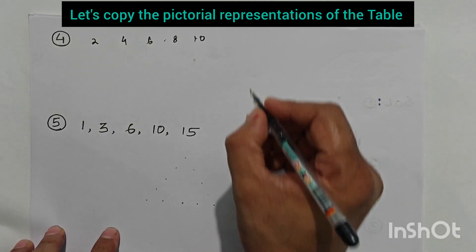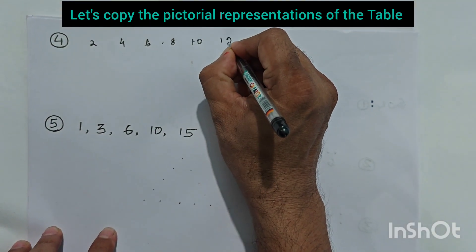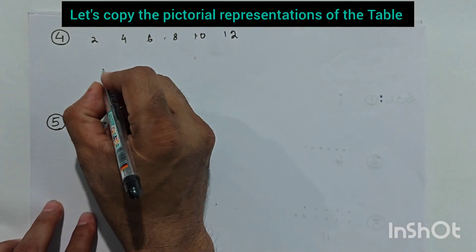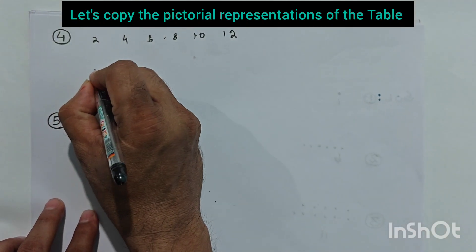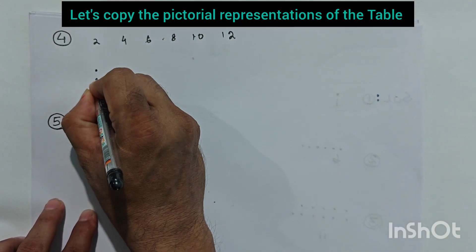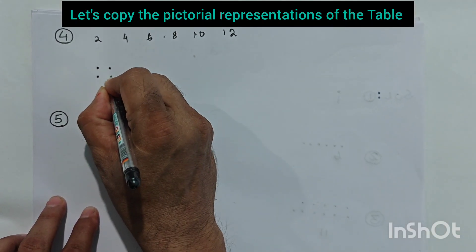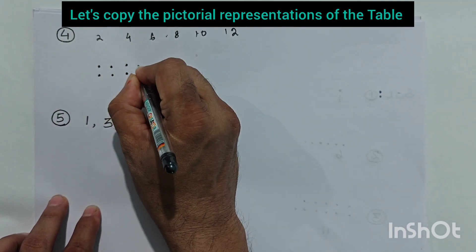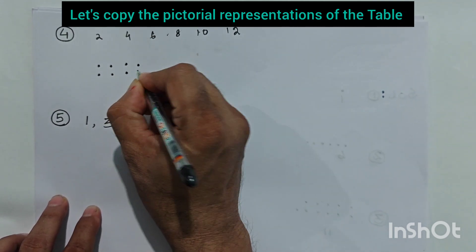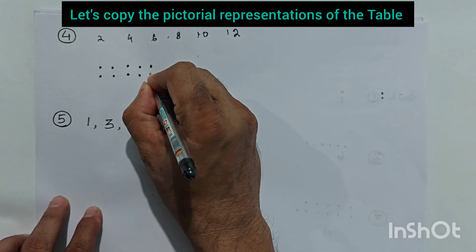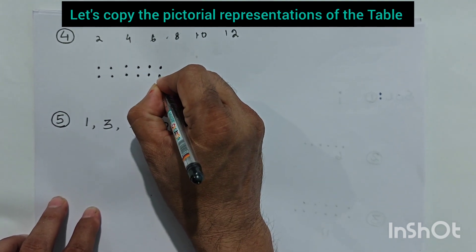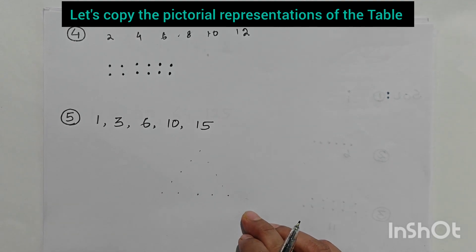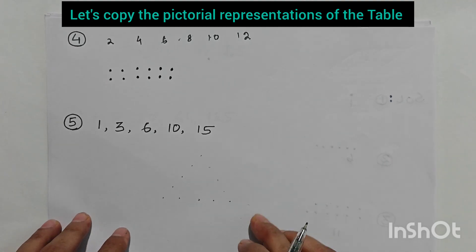The next even number will be twelve. We have to represent twelve by putting twelve dots: one, two, three, four, five, six, seven, eight, nine, ten, eleven, twelve. The next sequence is the triangular numbers, up to fifteen.